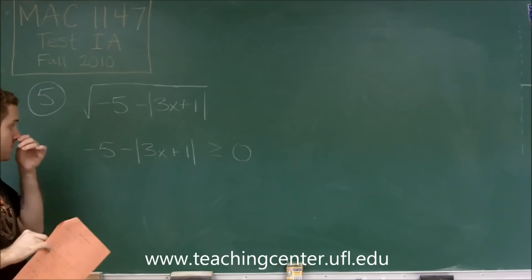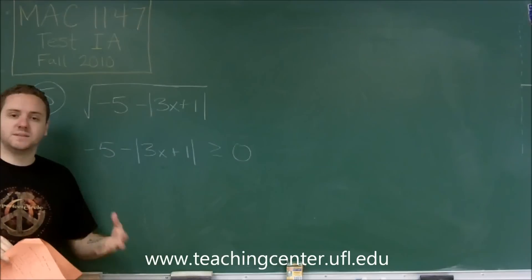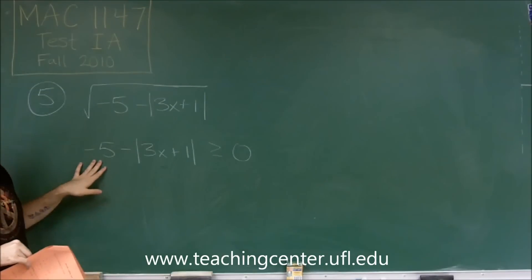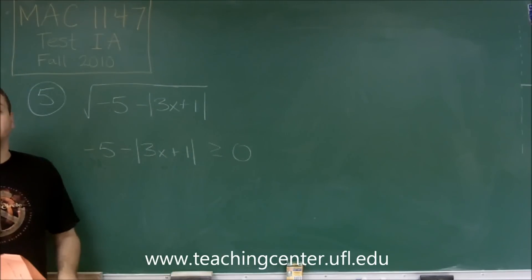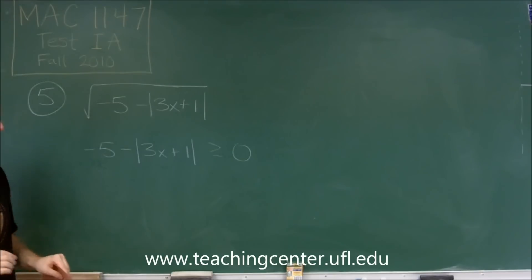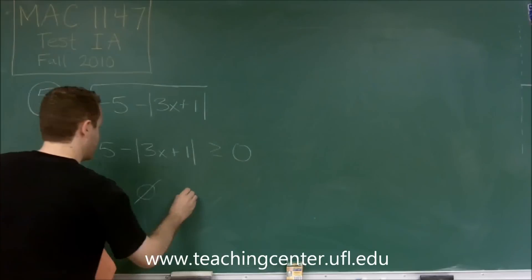But there's a problem with this one in that this is always positive because it's an absolute value. You're subtracting it from a negative number, meaning this is always going to be negative no matter what you do. So it's obviously never going to be greater than or equal to zero. And you have no solutions to this, which is answer choice A.